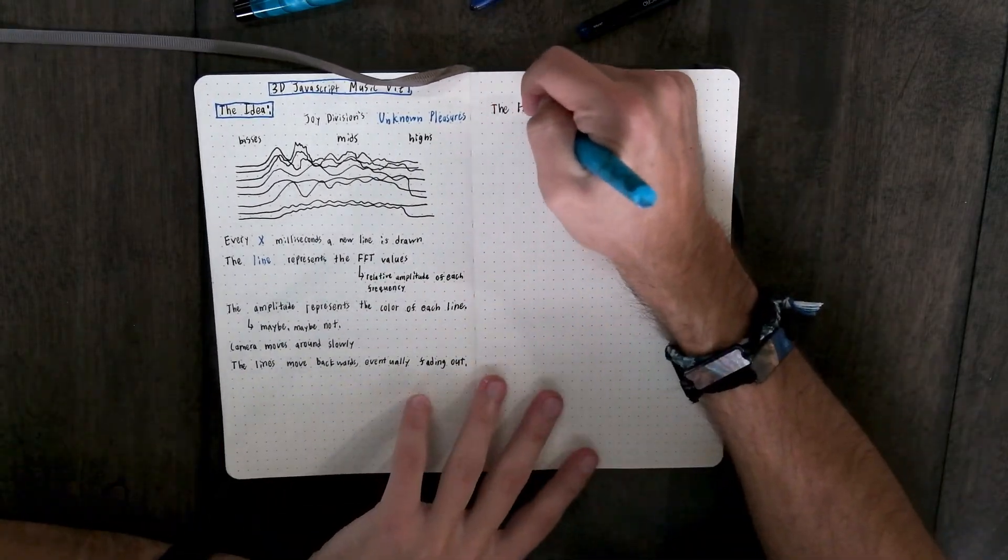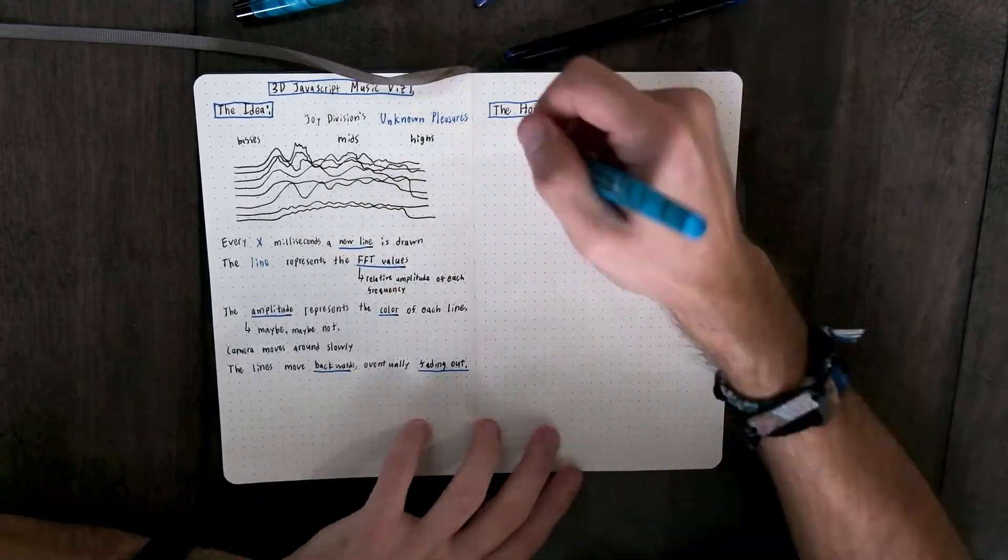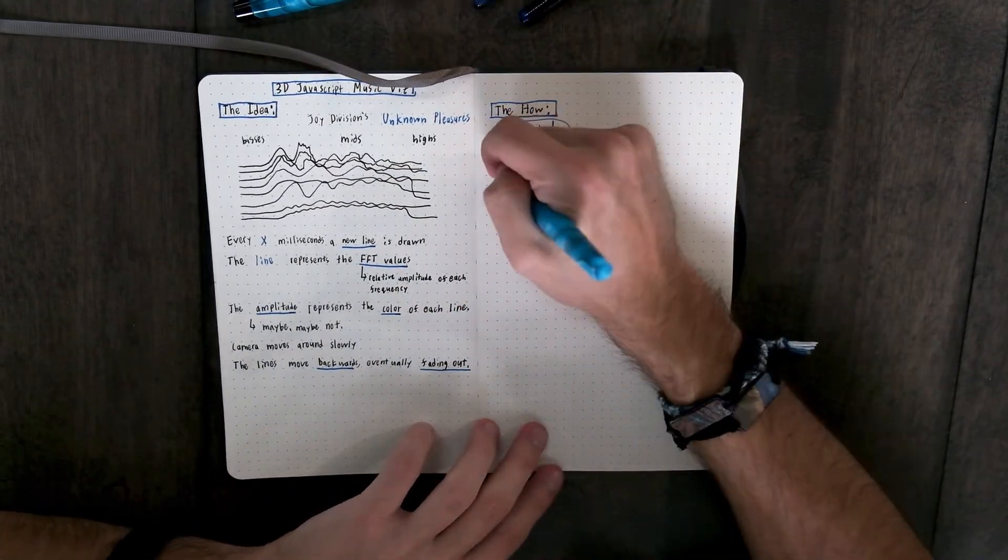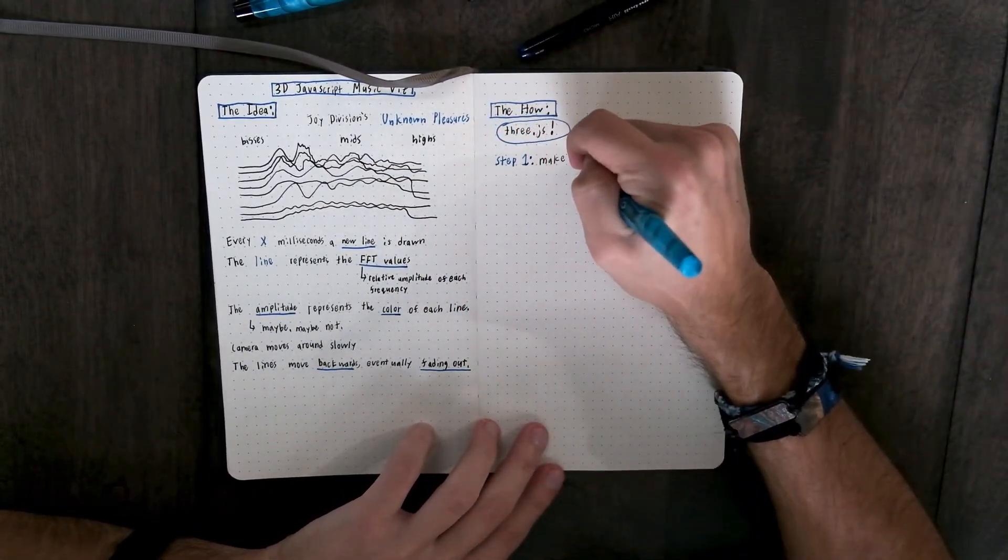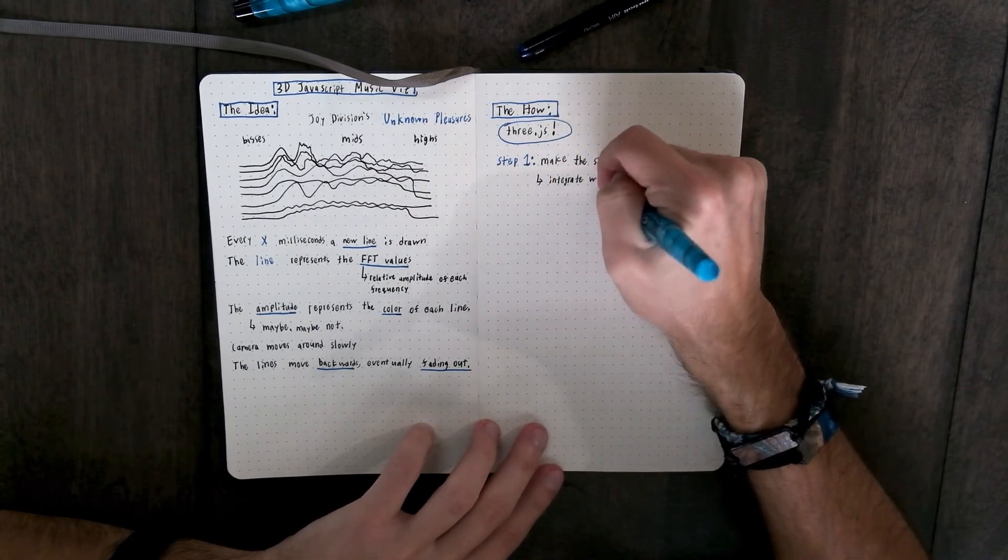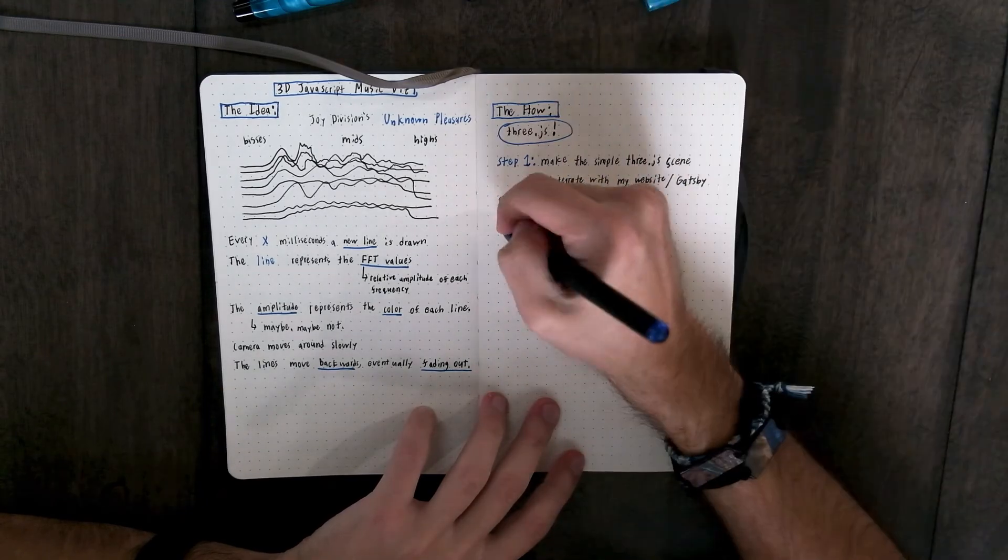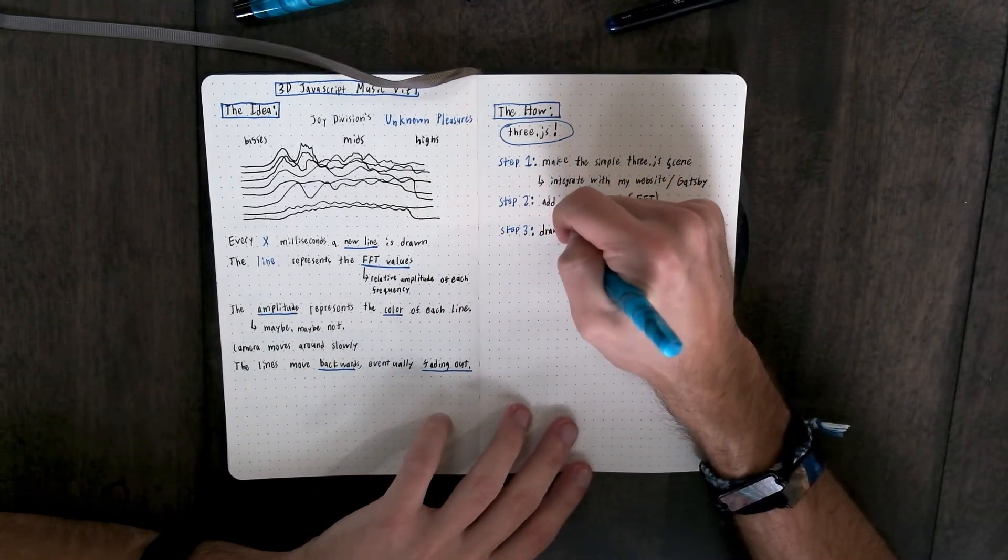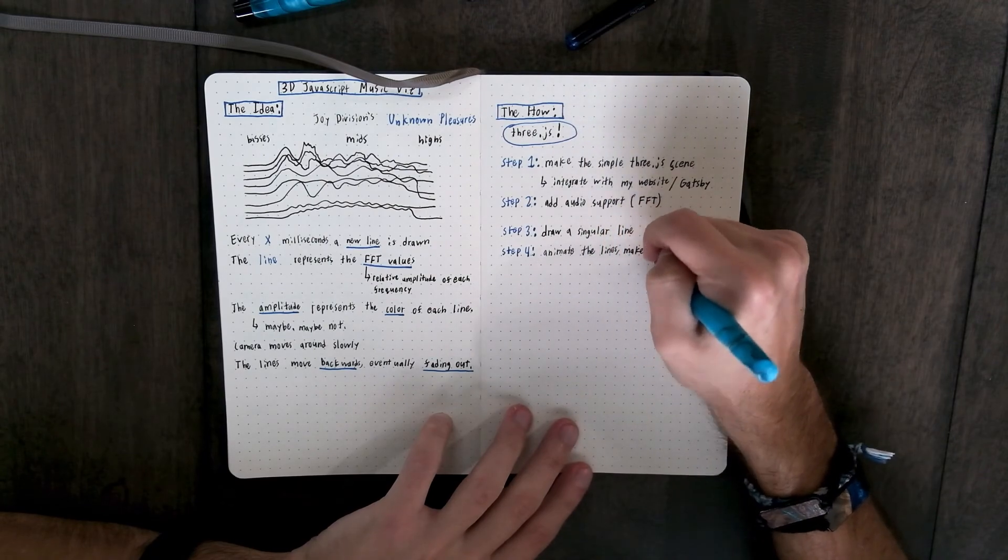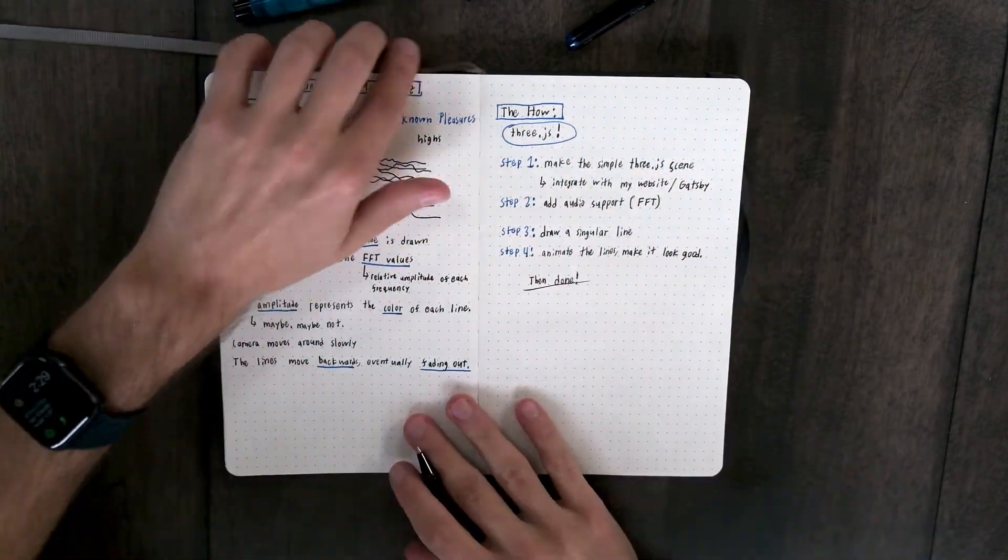How am I going to do it? I'm going to use Three.js. So first I need to make a simple Three.js scene and integrate it with my website Gatsby. Then I need to add audio support so I have it play audio and do the analysis with the FFT. Then I need to learn how to draw the simple line with the FFT information, and lastly I need to animate it and make it look good. Let's get started coding.